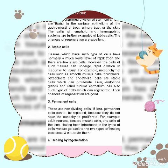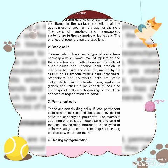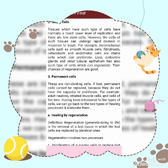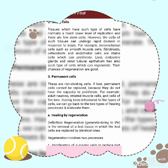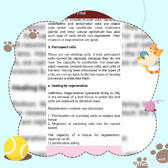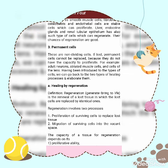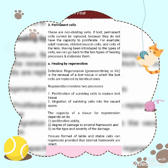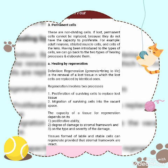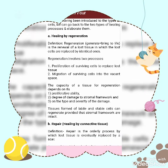Having been introduced to types of cells, we can go back to the types of the healing process. Healing by regeneration: regeneration, meaning to bring to life, is the renewal of lost tissue in which the lost cells are replaced by identical ones. Regeneration involves two processes: first, proliferation of surviving cells to replace lost tissue, and second, migration of the surviving cells into the vacant space.